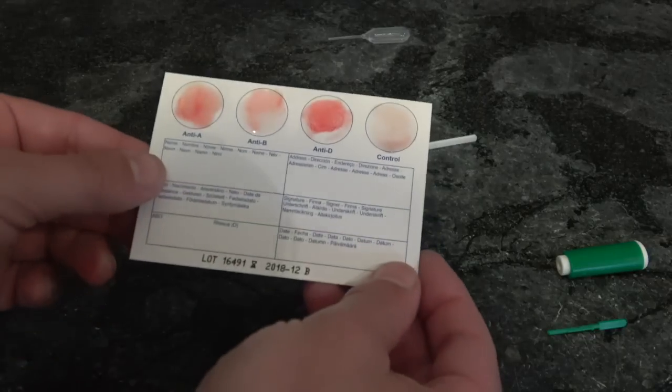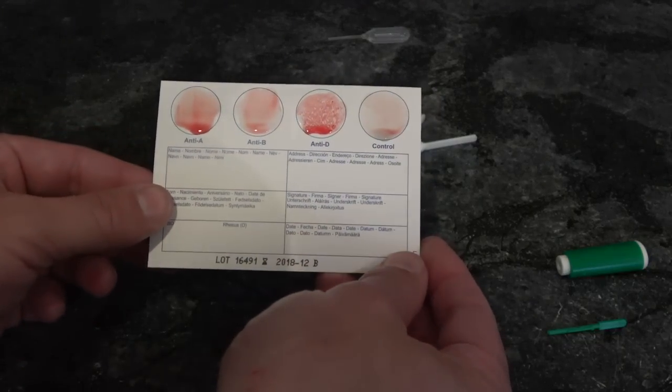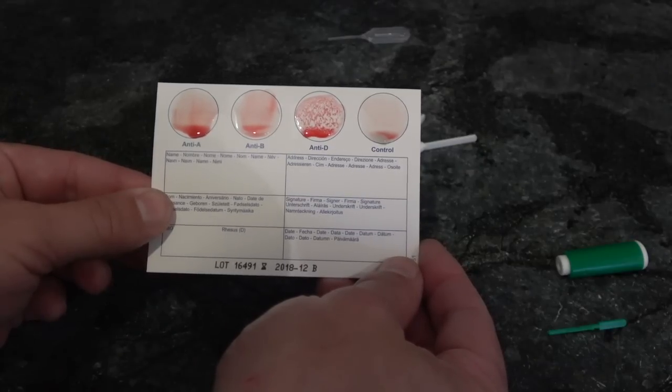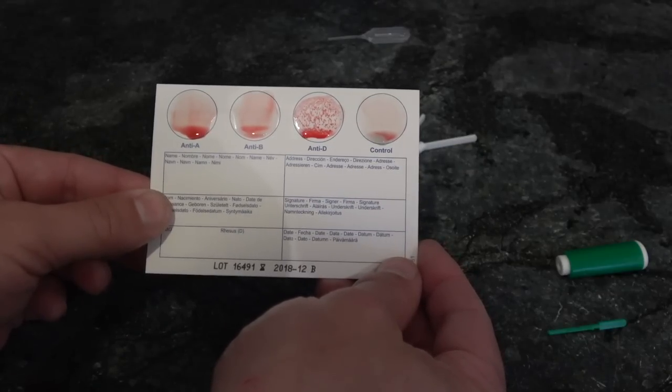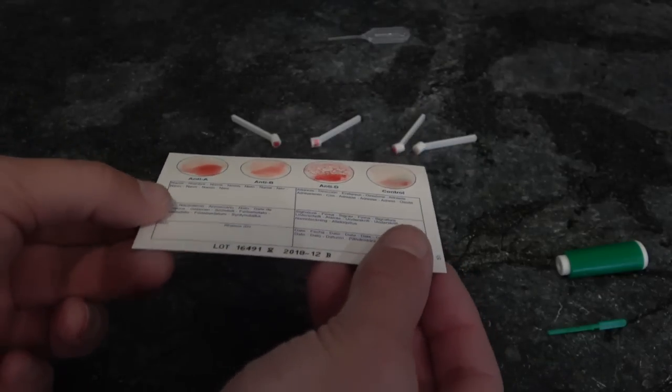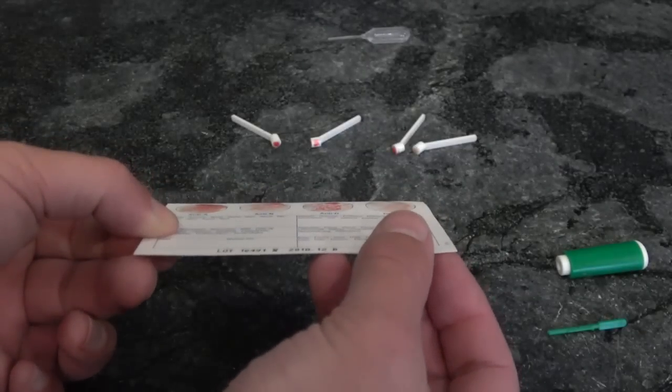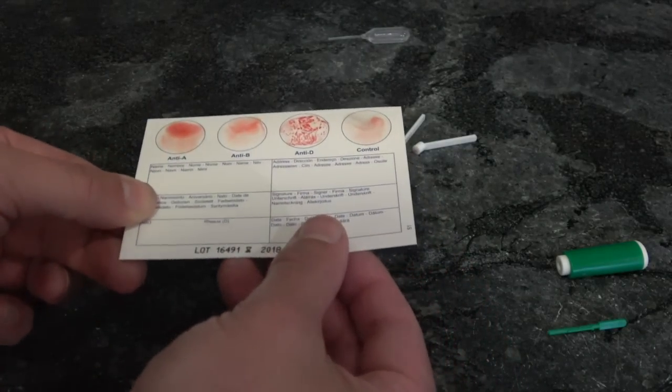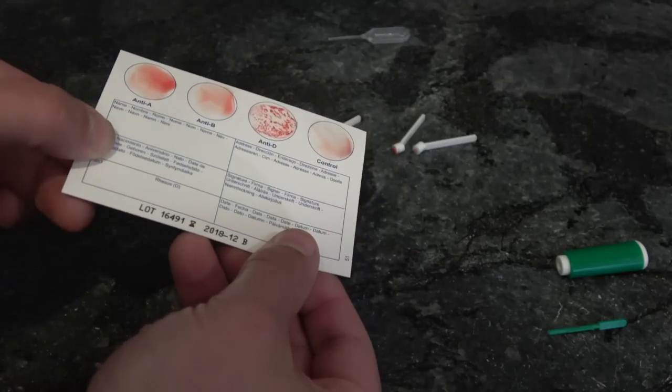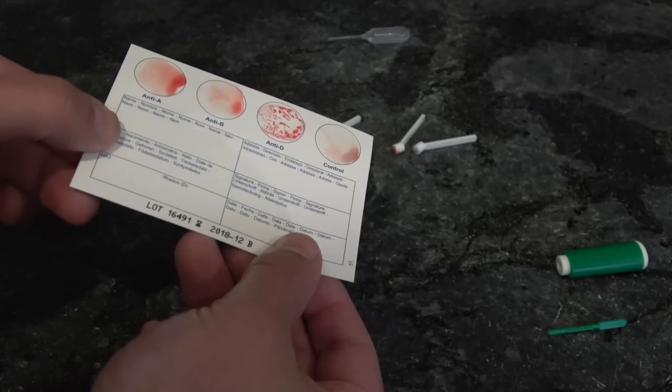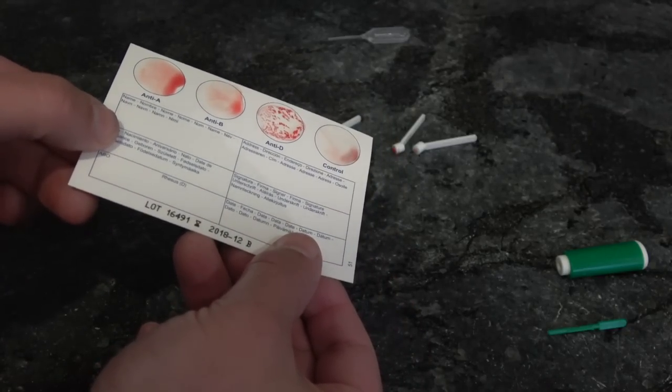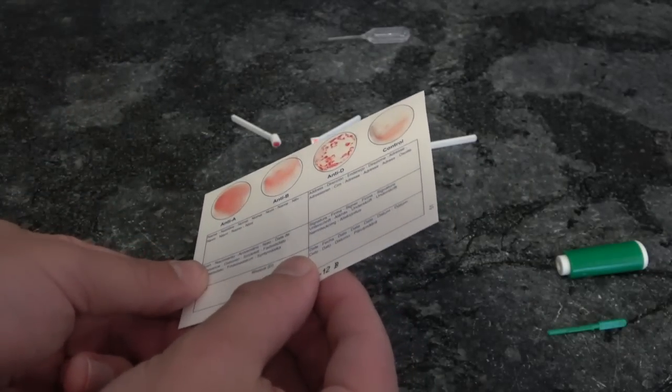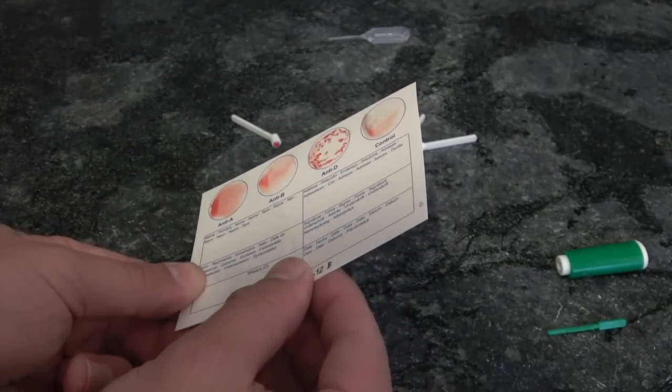So now we're going to take the card and we're going to tilt it down for about ten seconds. You could already see the anti-D agglutinating there. And we're going to turn it, rotate it away. Just tilt it away, center it again, then tilt it to the right. You're trying to keep the drips from dripping out of one circle and into another that would contaminate it, and then drip to the left, just like that.